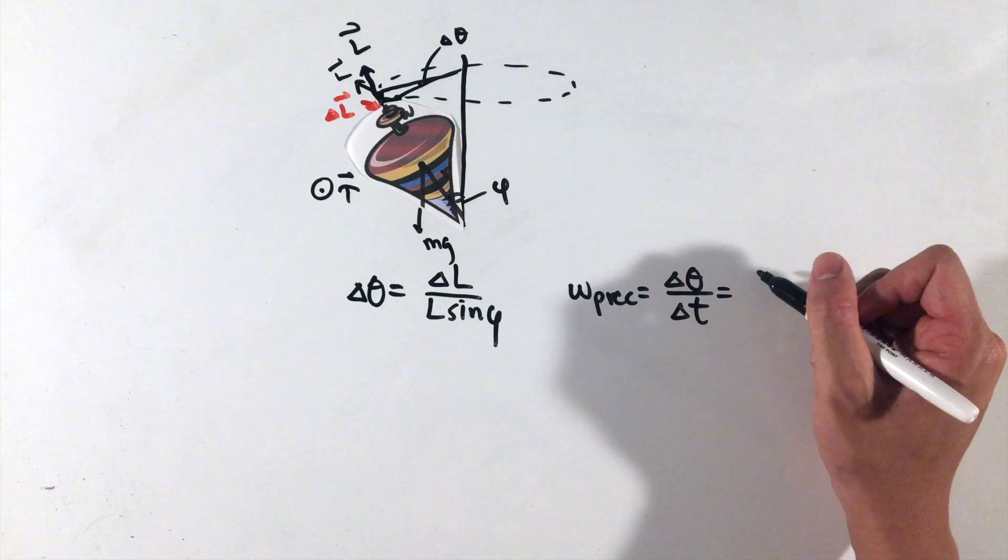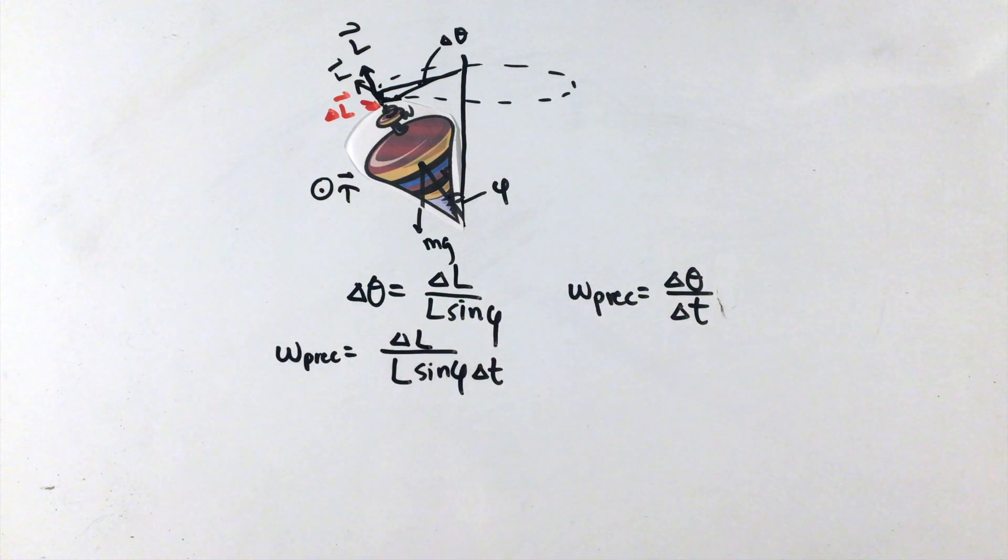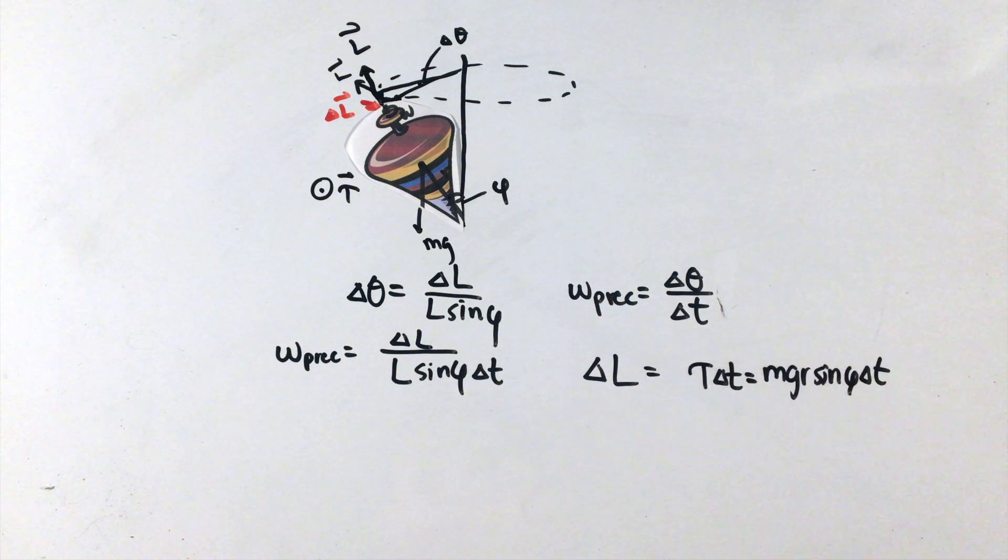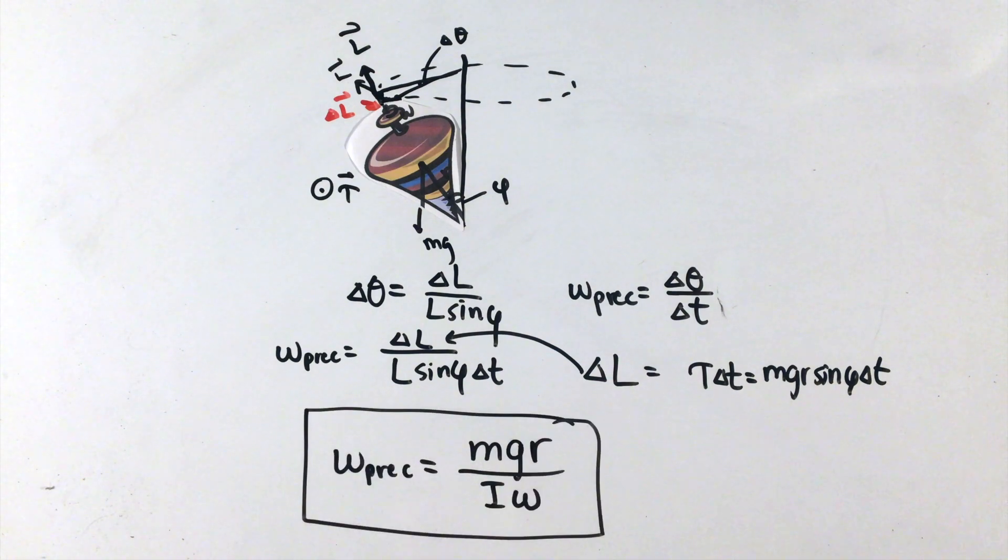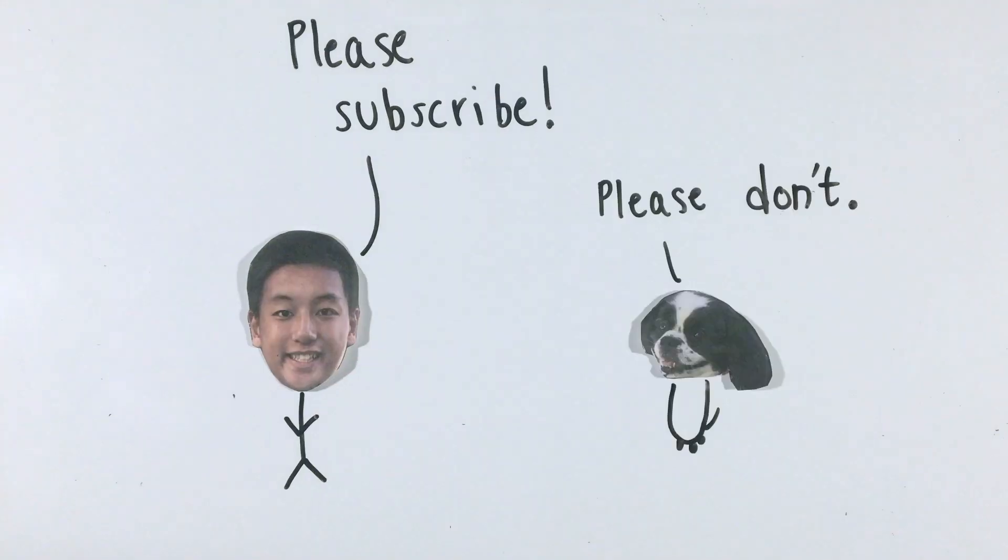From there, we can define our angular velocity of this precession to be delta theta over delta t from our rotational kinematics equations. The last step is to recall that our change in angular momentum is due to the torque's angular impulse on our top, which we can write as the torque mgr sine phi times the length of time it was applied for, delta t. Simplifying this fraction, we can arrive at our rate of precession equation. With that, you can feel good that you just finished learning about angular momentum and the concept of precession. Thank you.